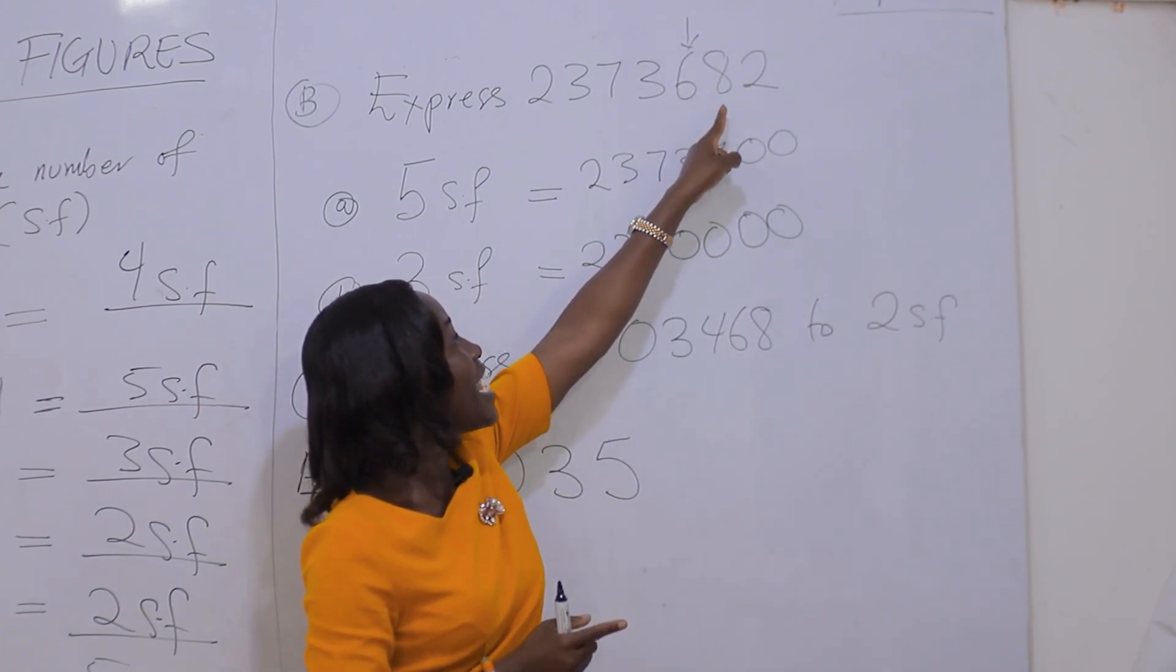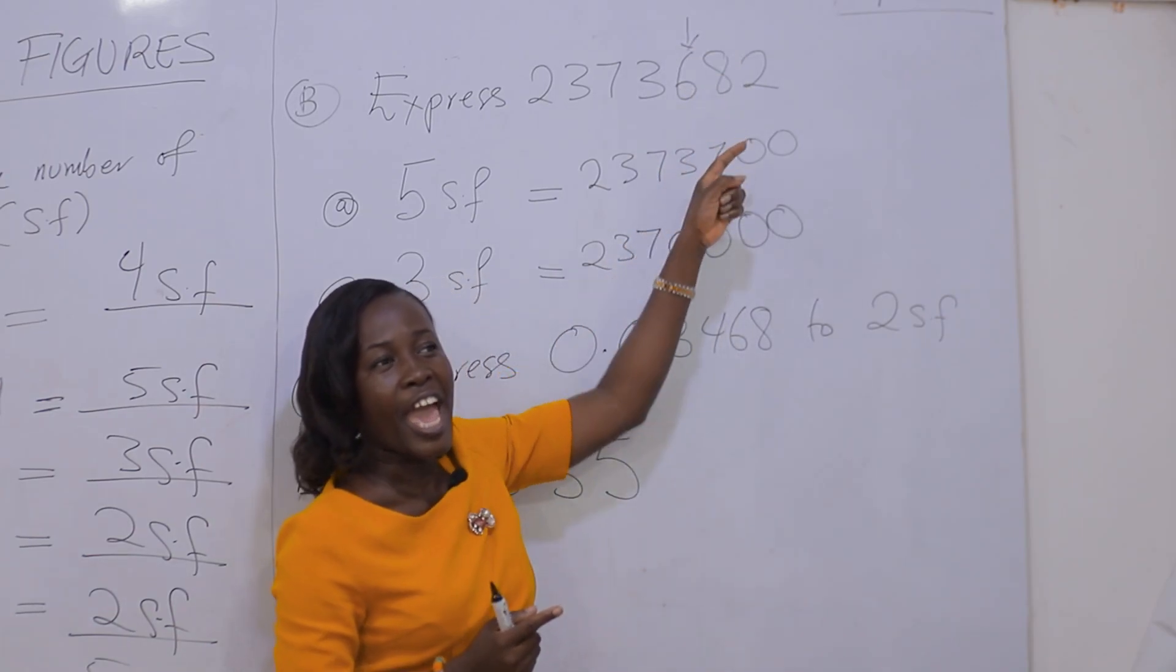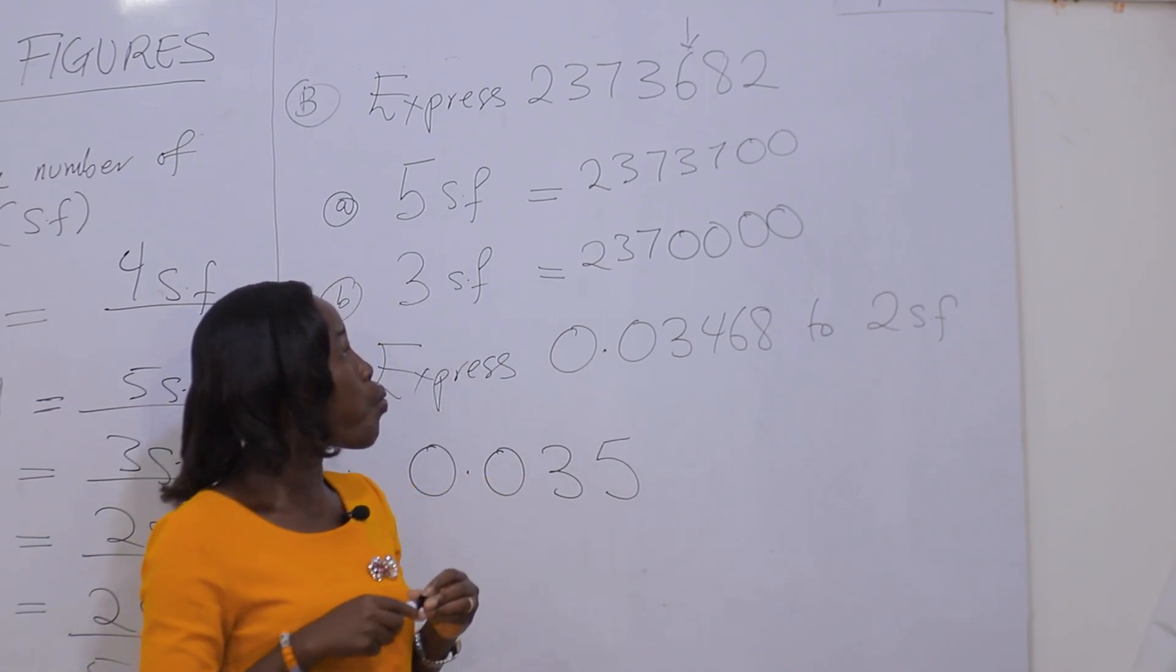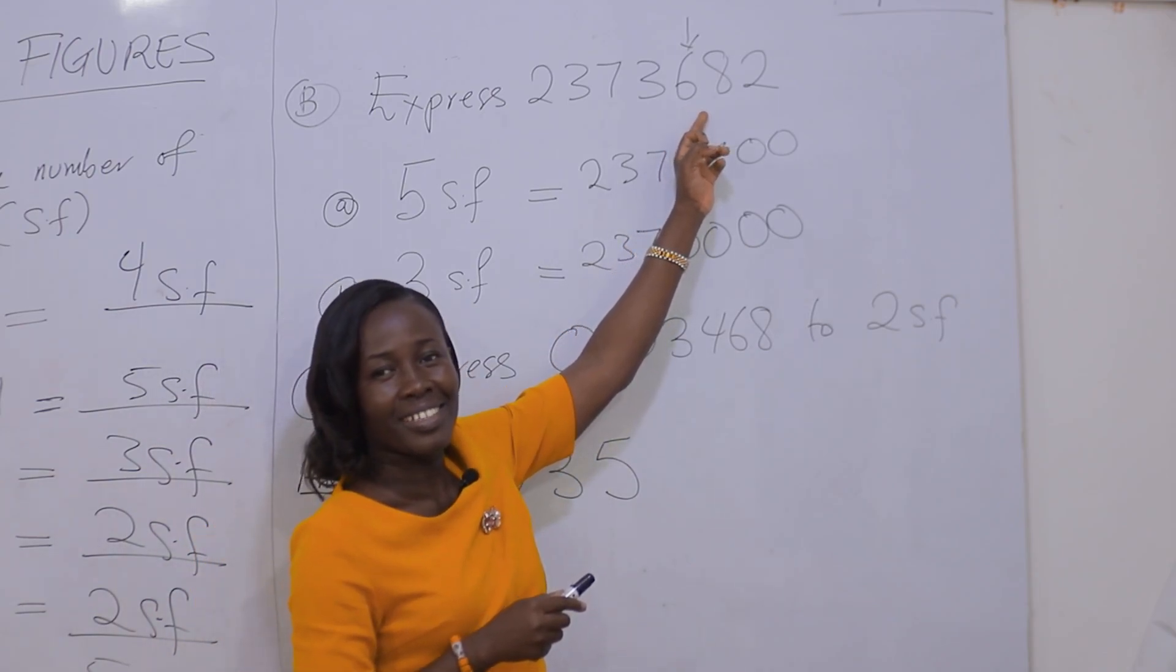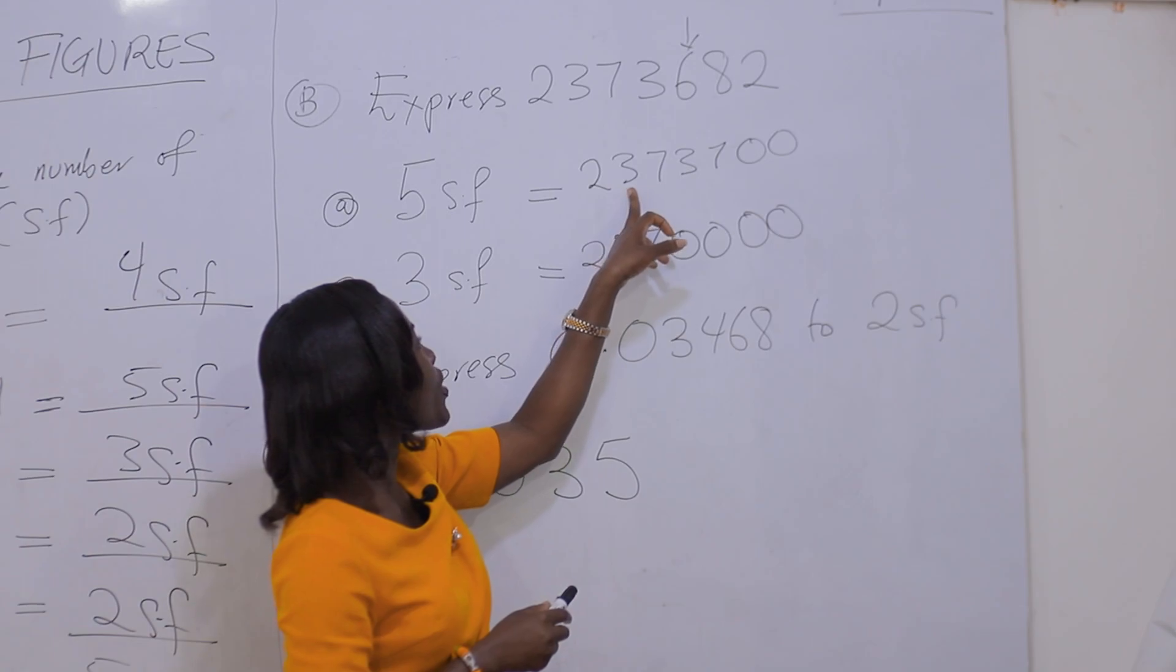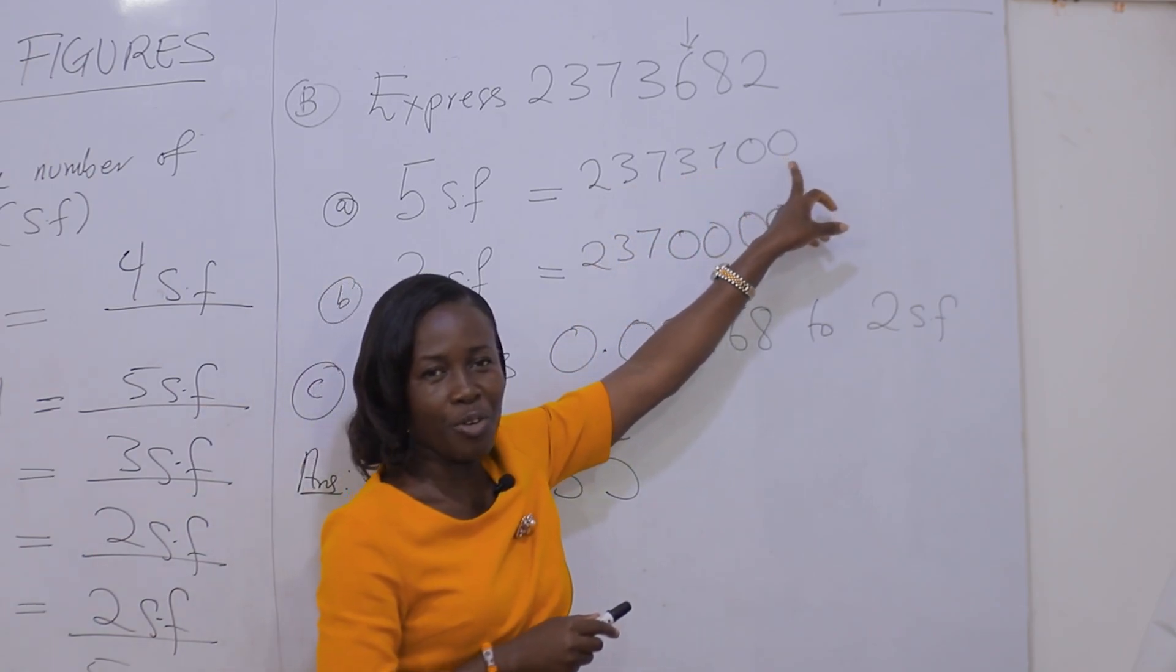Then we consider the next number on the right. If the number is 5 or more, we round it up and add 1 to the number, giving us 7. So we have 2, 3, 7, 3, 7, 0, 0.